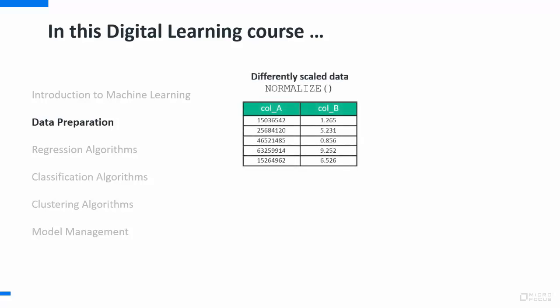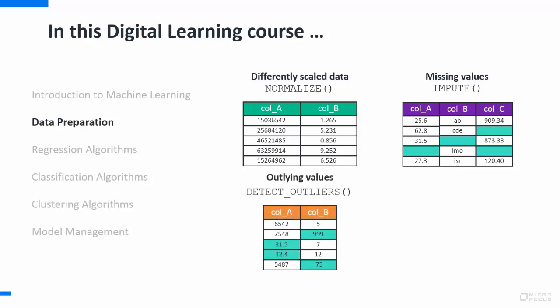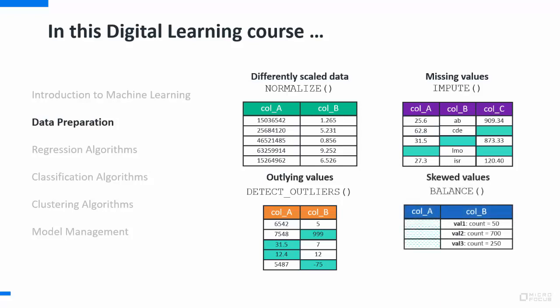Normalize, where you adjust the scaling of values in different columns. Impute, which allows you to fill in missing data values. Detect outliers, where you can identify and eliminate outlying data points. And Balance, where you can even out the distribution of skewed value counts in a column.